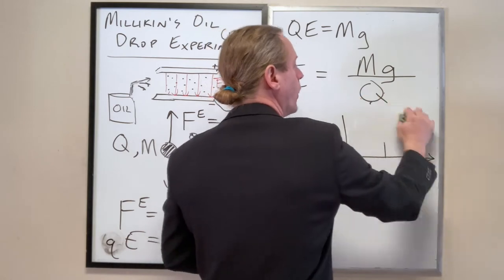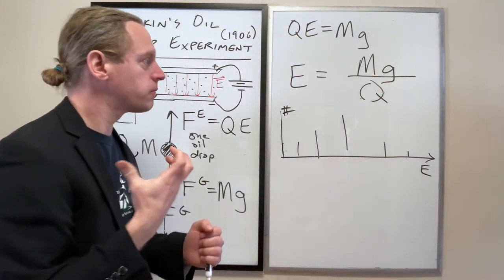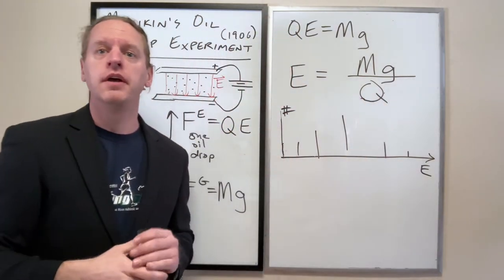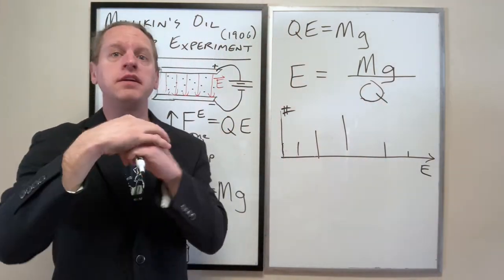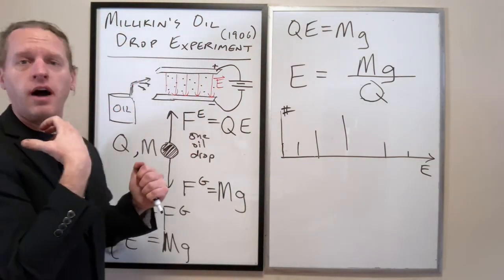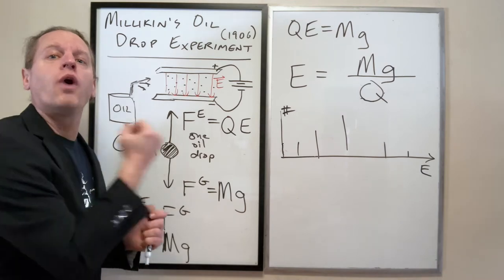That whatever gives a matter charge is a quantized thing. That charge does not come in continuous amounts. That if you want to give an oil droplet charge, you have to do it one amount at a time.